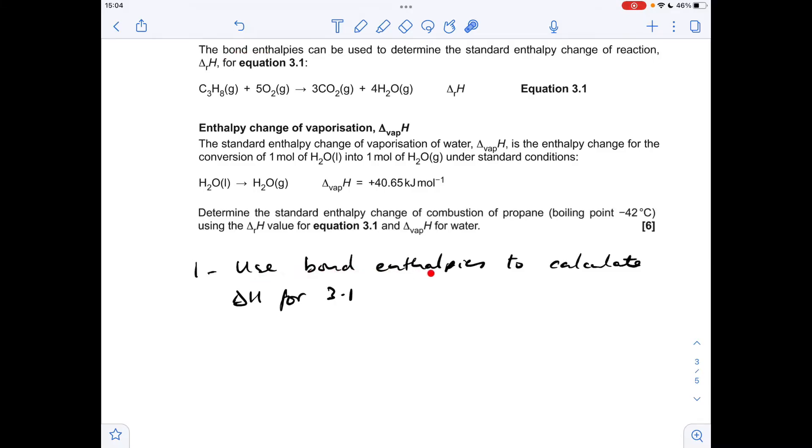We're going to use the bond enthalpies to calculate the enthalpy change for 3.1. We need to have a realization that the standard enthalpy change of combustion of propane includes H2O liquid and not gaseous H2O, which is what we've got in this equation. So to do that, we need to factor in the enthalpy change of vaporization for water, which is obviously given here.